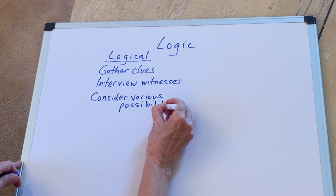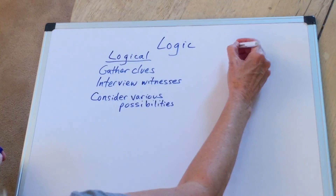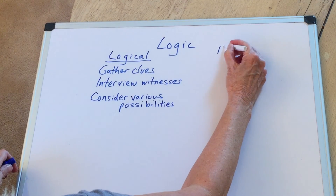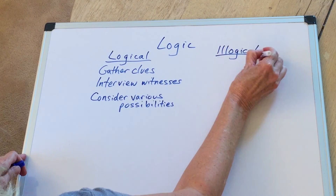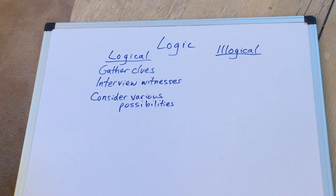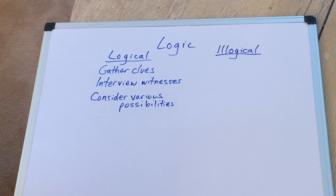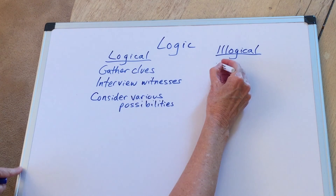In contrast, suppose you were an illogical detective. What are some things you might do? Well, suppose at the beginning you hear about the daughter — she's going to inherit money from her father, she was here last night — and you say, 'She's guilty, let's arrest her.' Would that be logical? No. You don't have enough evidence yet. We call that jumping to a conclusion.